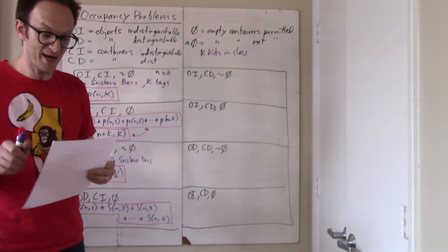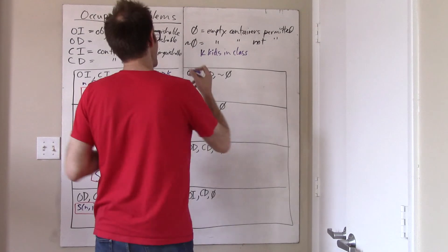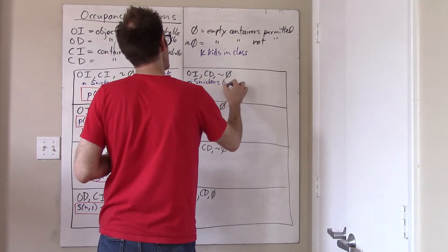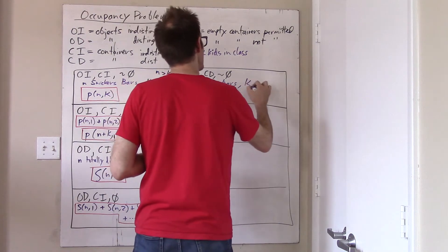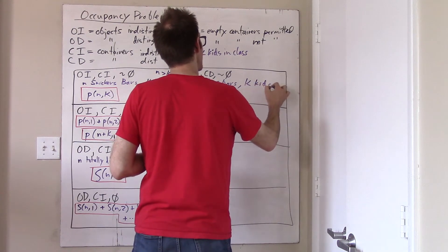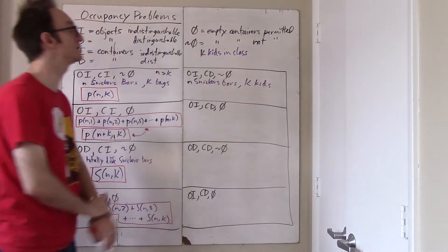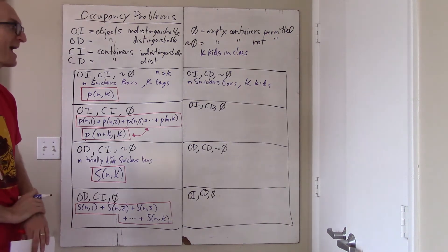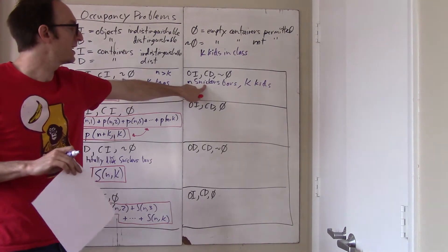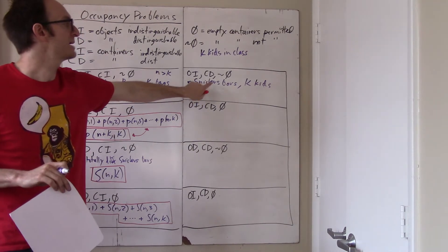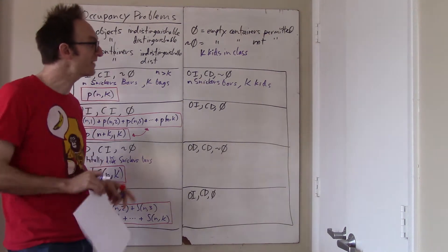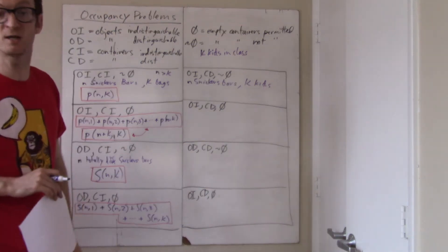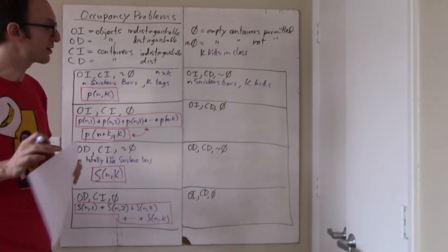Our objects are indistinguishable, so we have just N Snickers bars — assuming now that the bars are all the same — and we have K kids, and not empty, meaning no kid can get an empty bag. Everyone's getting the same kind of candy bar and no one's getting nothing, but it's still not fair, because one kid can get a lot of bars and one kid could just get one bar. How many ways are there to do this?